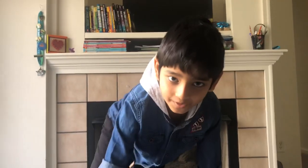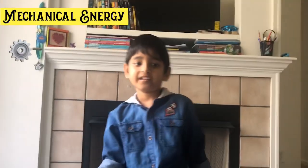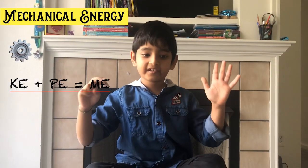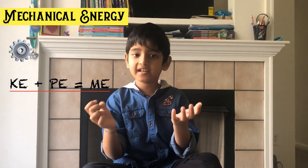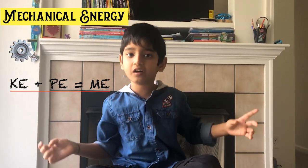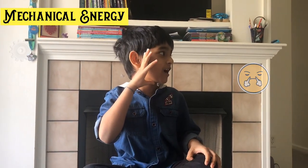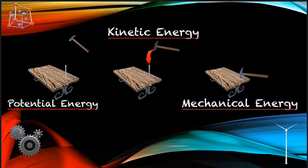Now let's move on to mechanical energy — that is the sum of both kinetic and potential energy in an object that is used to do work. Here's an example: a hammer in motion. When the hammer is at rest, that's potential energy. When you swing the hammer up some distance from the nail, it's kinetic energy. Finally, when the hammer hits the nail, it's mechanical energy.